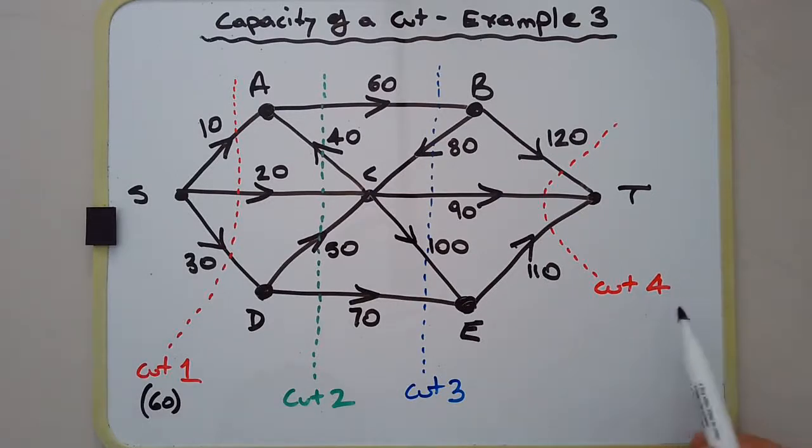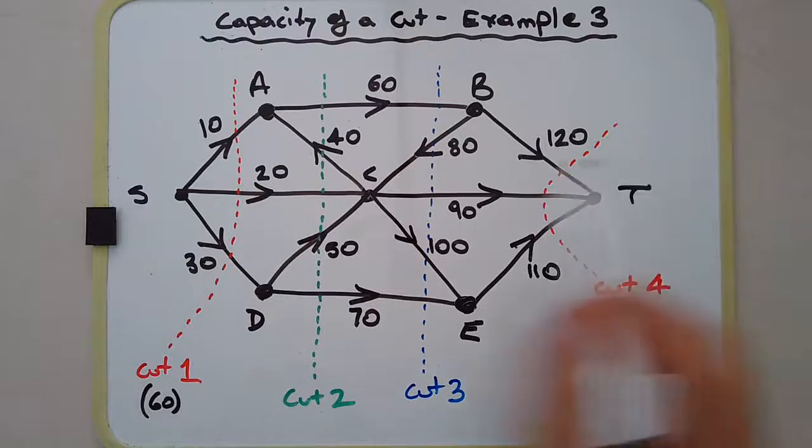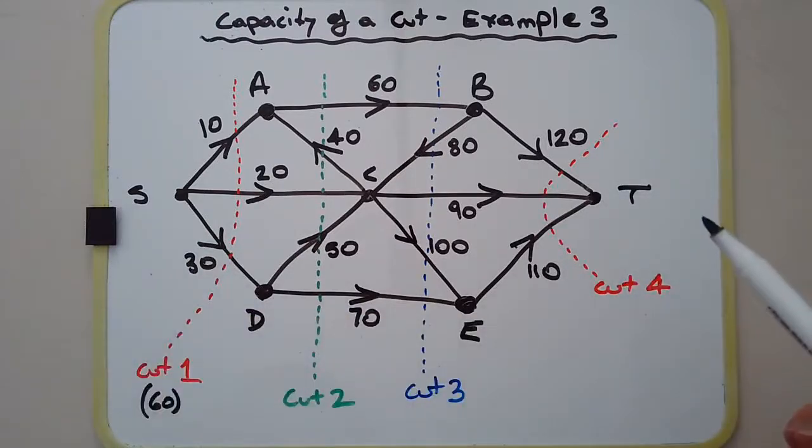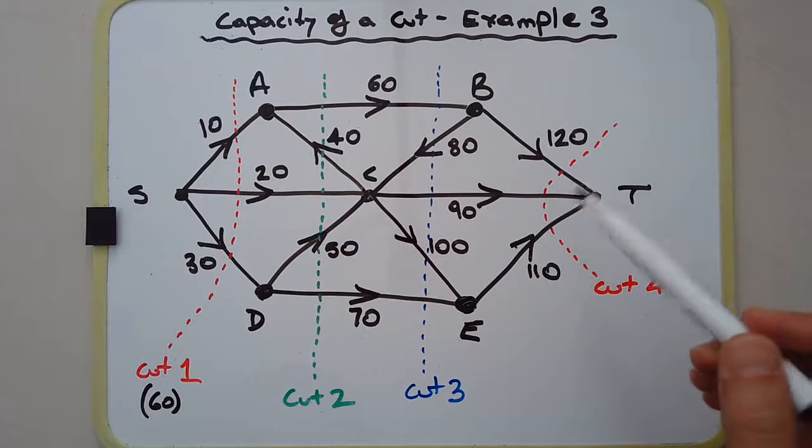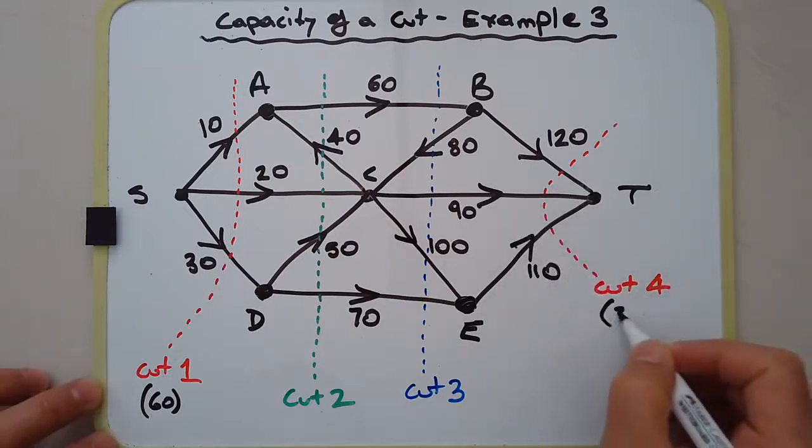Cut number four is also a very obvious cut that cuts off the source from the sink. Again, all three edges here are necessary, so we have 120 plus 90 plus 110, and that's 320—the capacity of that cut. Two very different numbers, isn't it?